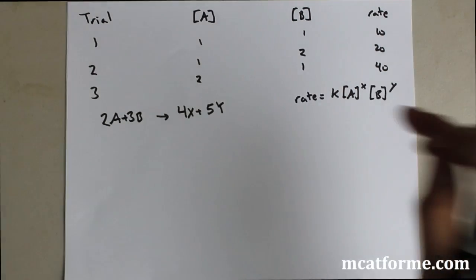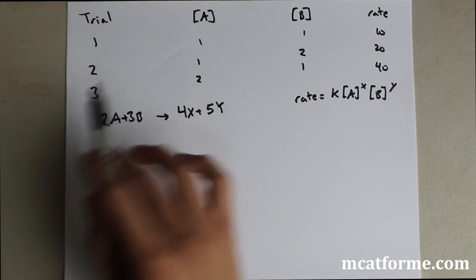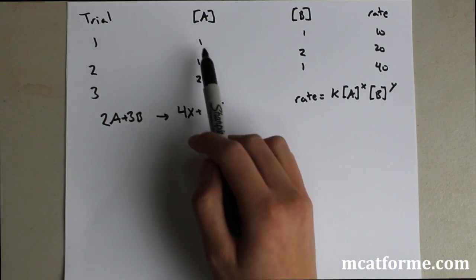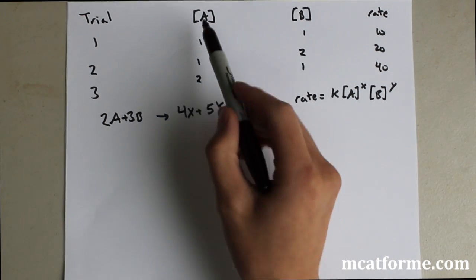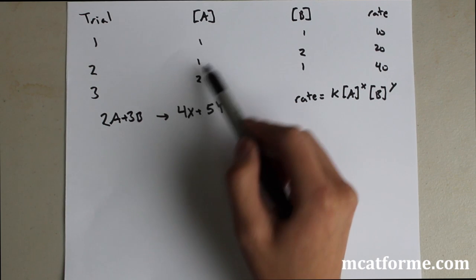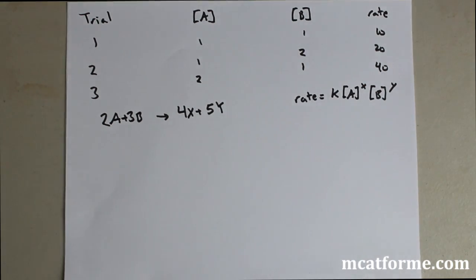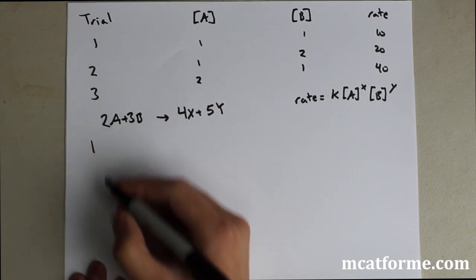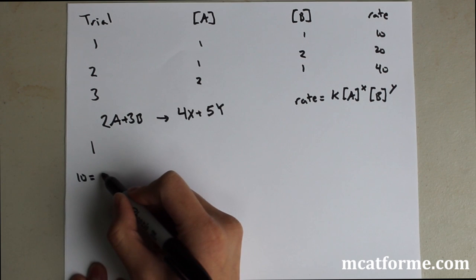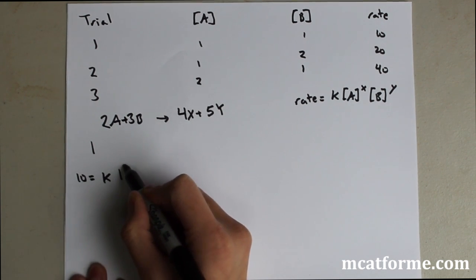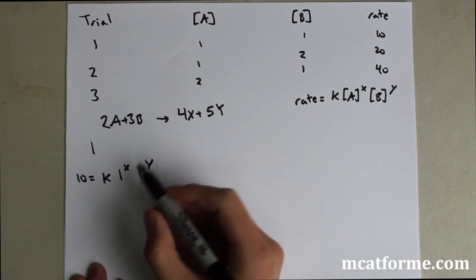In order to solve the actual rate, we have to use this experimental data and manipulate it in a certain way. All we're doing is we're going to plug in these numbers into this equation and try to solve for X and Y. We're going to pair things up based on which one has equal concentration for each one. We're going to do two separate sets, and we're going to pair up 1 and 2 because A is going to be constant, and we're going to pair up 1 and 3 because B is going to be constant. So the first thing we're going to do is trial 1: the rate is 10 equals K times A, which is going to be 1 to the X, times B to the Y, which would be 1 to the Y.